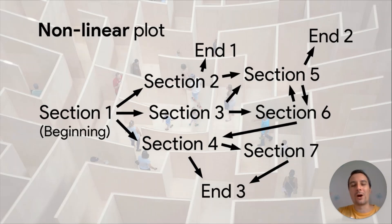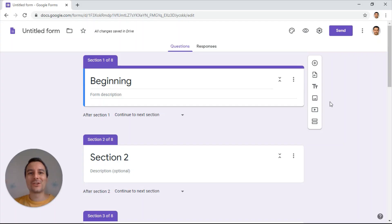While creating this, your students have to be thinking about the plausibility of these options — they have to think about cause and effect. So once you're happy with your plan, you're now ready to replicate the structure in Google Forms.